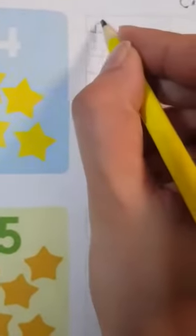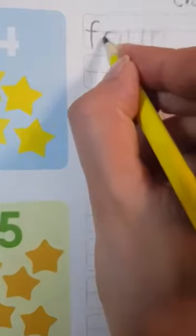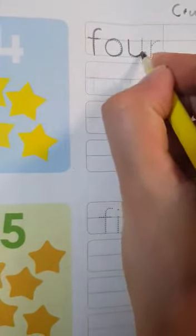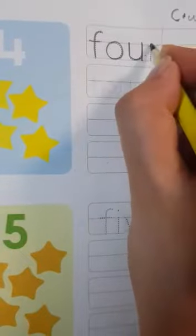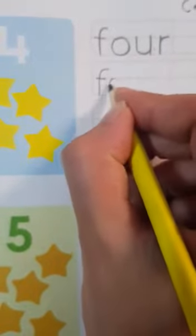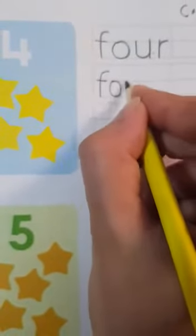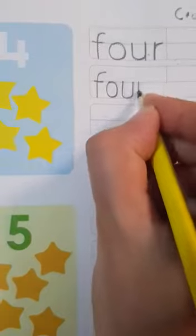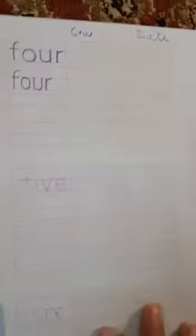So 4, F-O-U-R, four. First you will trace the spelling of 4. F-O-U-R, four. Then you write it down. F-O-U-R, four. So in the same way you will fill all these lines.